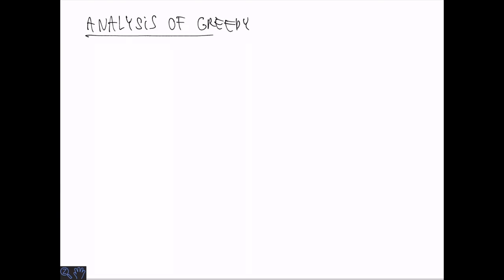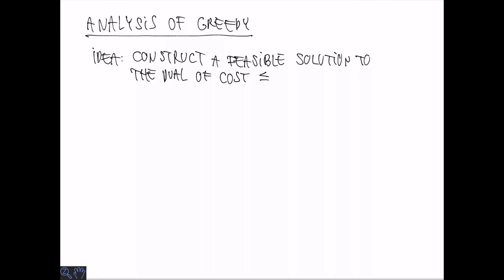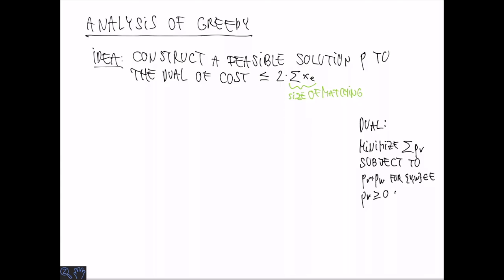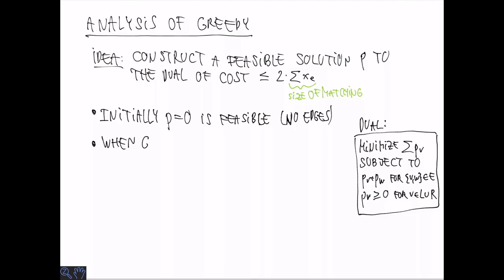The analysis of greedy that we are going to do goes via the dual of the LP relaxation. So, the idea is to construct a feasible solution to the dual, let's call it P, of cost that is at most two times the size of the matching that we get, so two times the sum of all the XEs. Now, remember that the dual wants to minimize the sum of all PV, where PV is a variable associated with V, under the constraint that PV plus PW is at least one for each edge VW in E. So we want to maintain this vector P at all times, and initially we can simply set P to zero, because we have no edges whatsoever, so all the constraints are void.